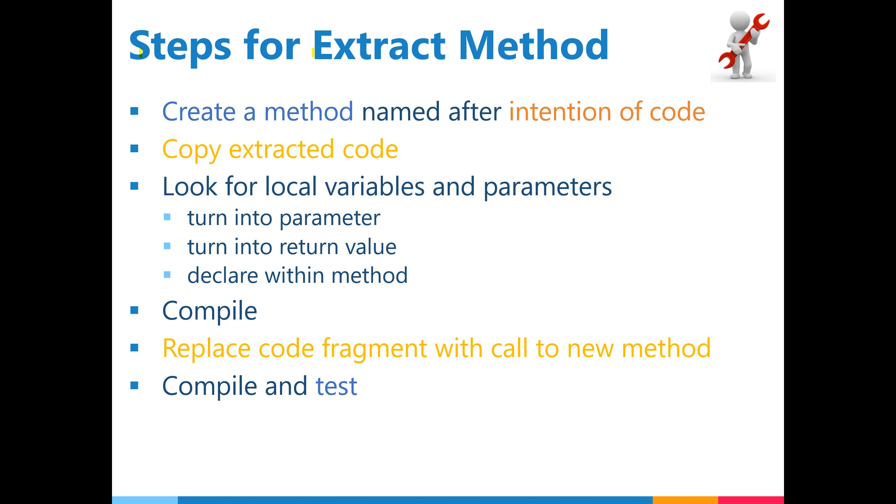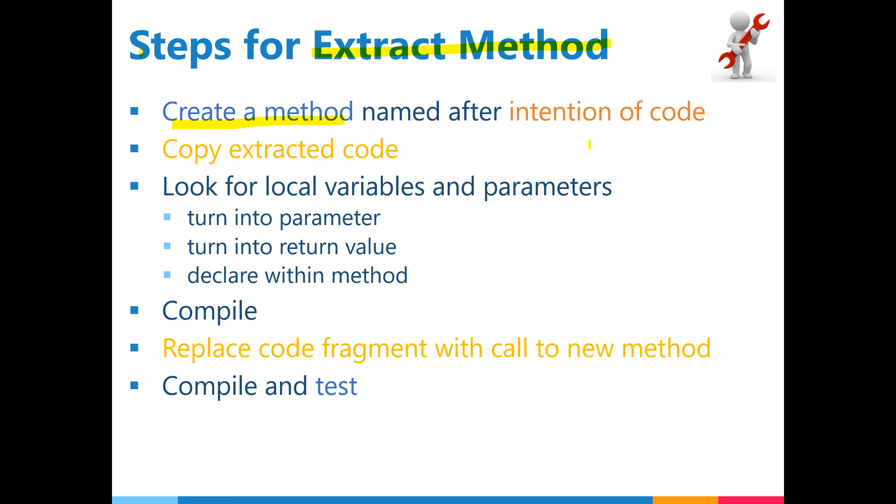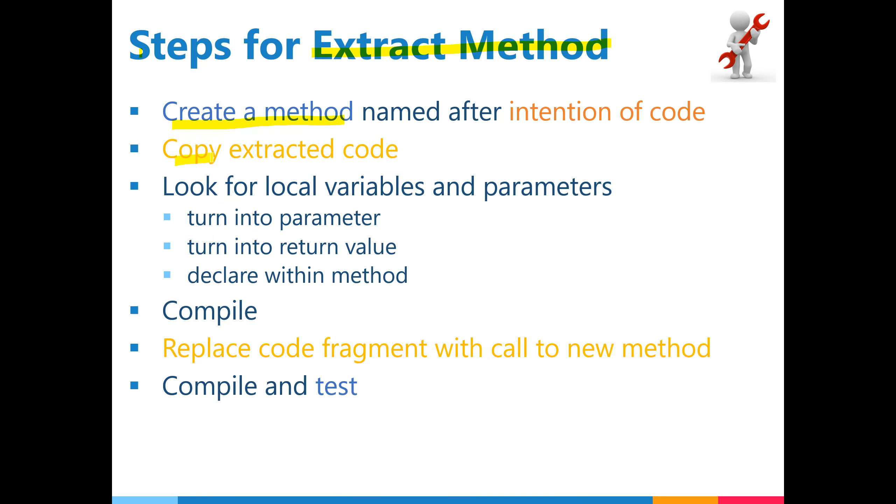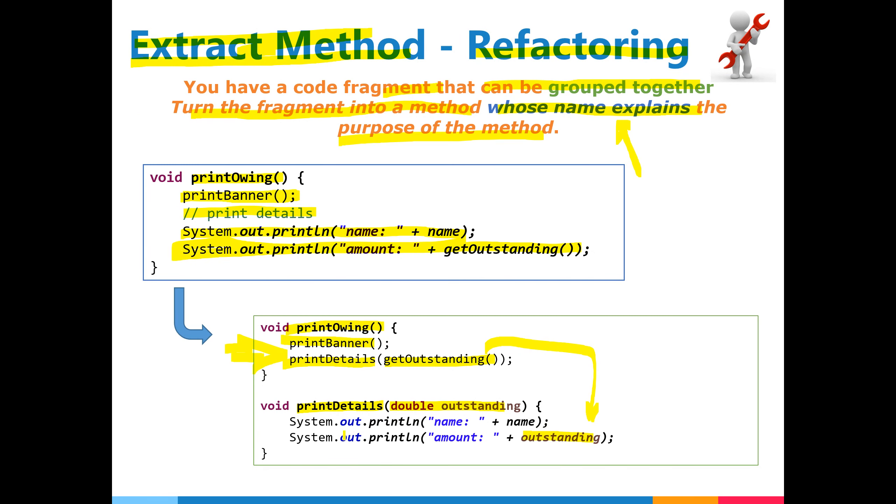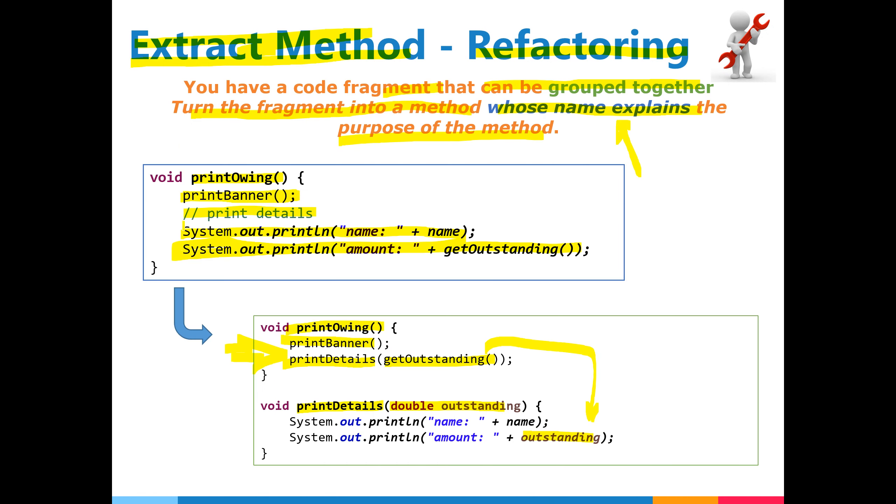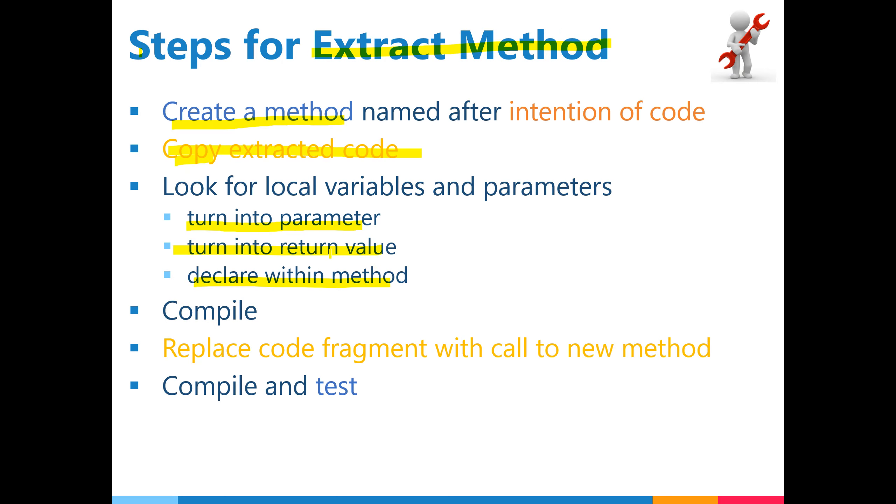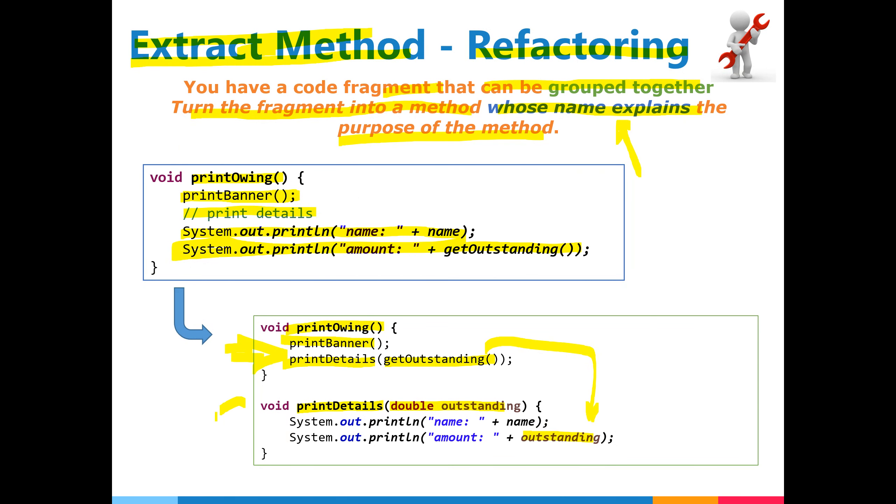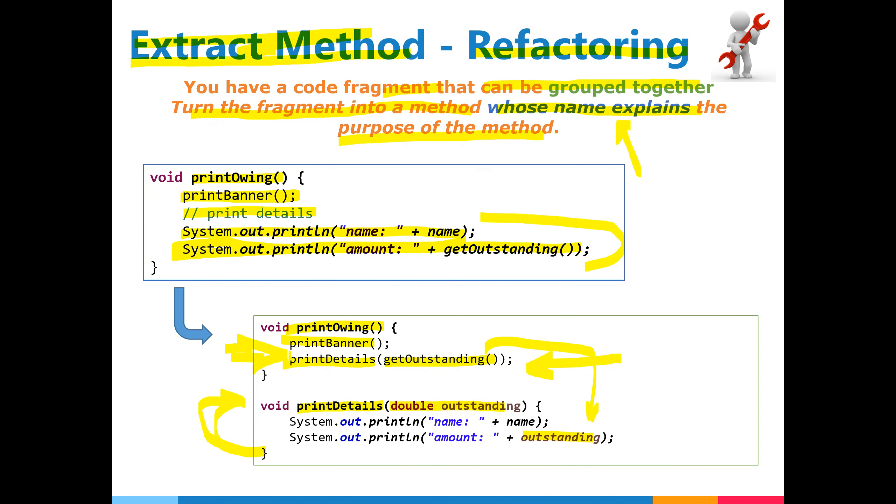So how do we do extract method? The steps are: create a method named after intention of the code. Copy the extracted code, not cut. Look for local variables and parameters, turn into parameter, turn into return value, declare within method. We compile, so look at this, we didn't cut this one, we compile, we make sure this code piece is working. There are several steps, we will be doing step by step. And later on, replace the code fragment with the call to this code we just have. Then we compile and test again, and if things are working, you are good, move to the next one.